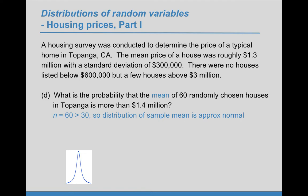Here, our sample size of 60 is greater than 30, so by our rule of thumb, the distribution of the sample mean is approximately normal.